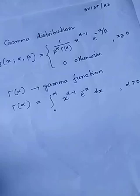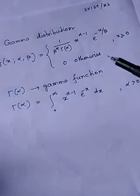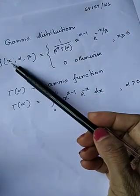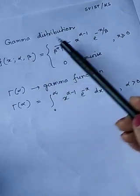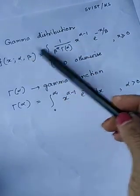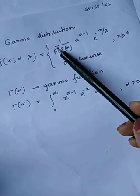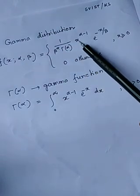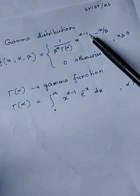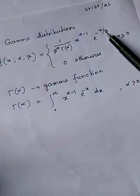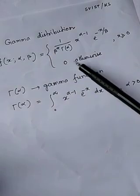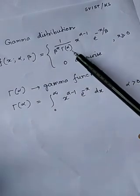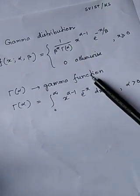Dear students, here is the PDF of the gamma distribution. f(x) equals 1 divided by beta to the power alpha, times gamma(alpha), times x to the power alpha minus 1, times e to the power minus x by beta, where x is greater than or equal to 0, and f(x) equals 0 otherwise. Here, alpha and beta are the parameters, and gamma(alpha) is the gamma function.